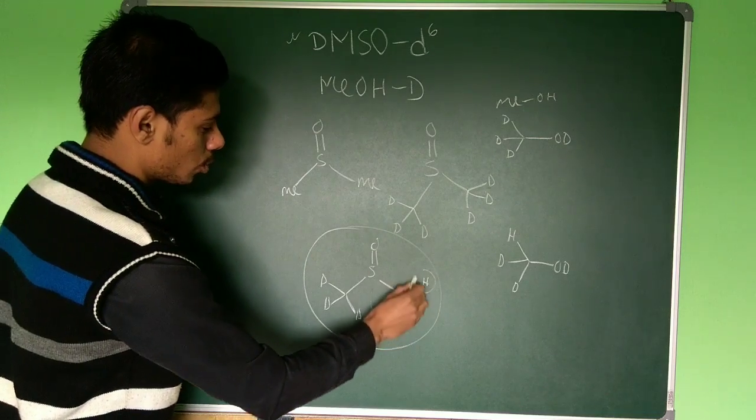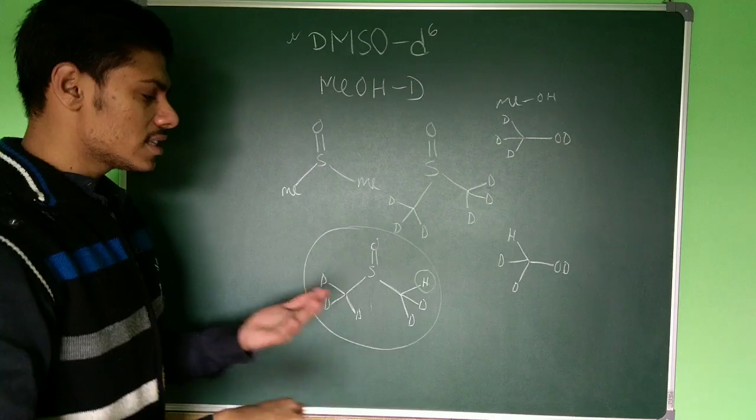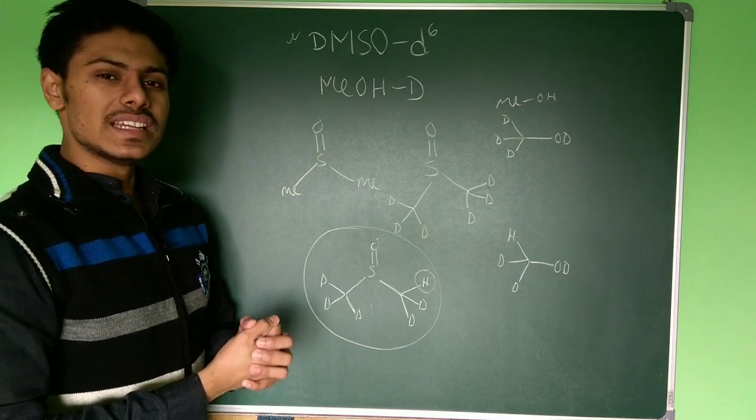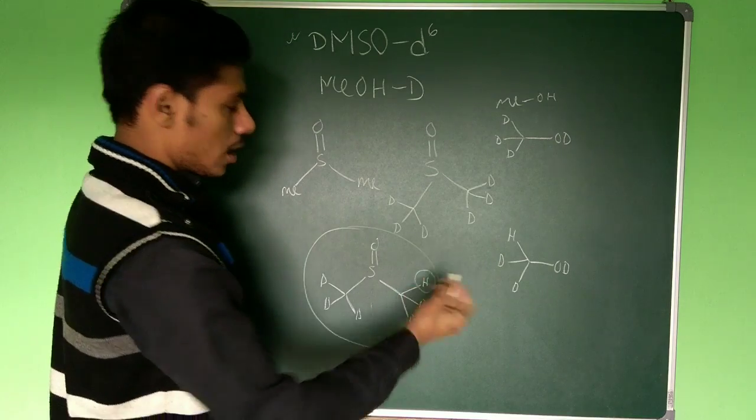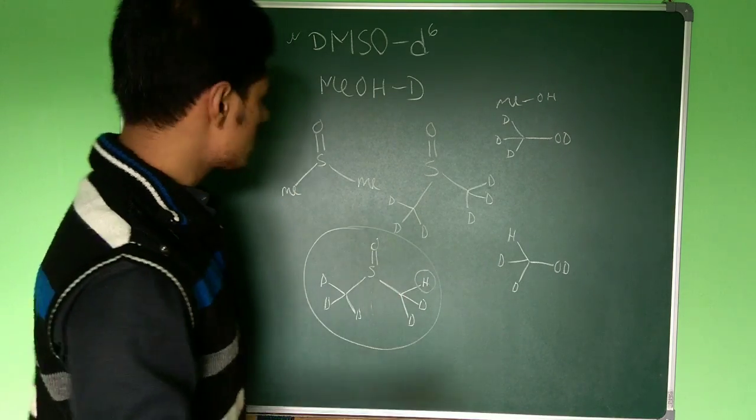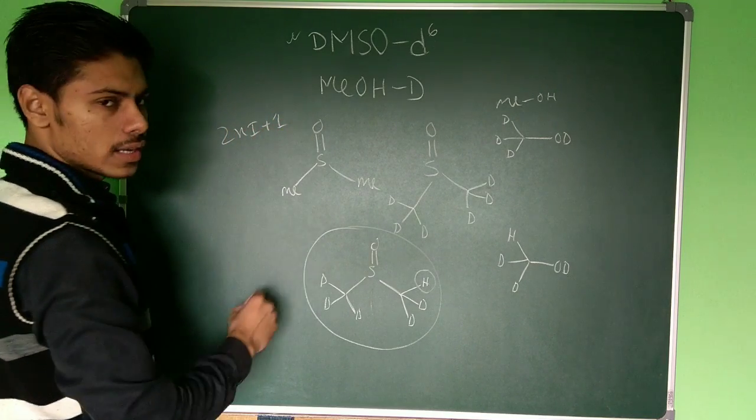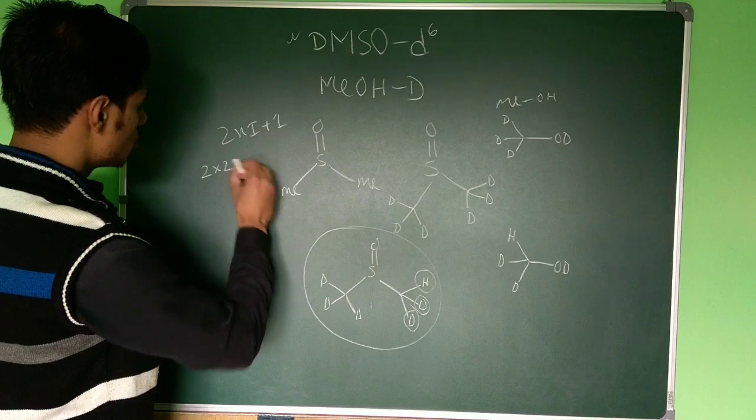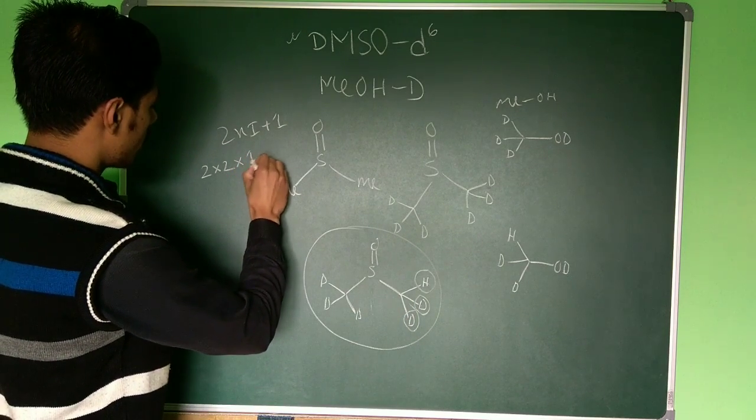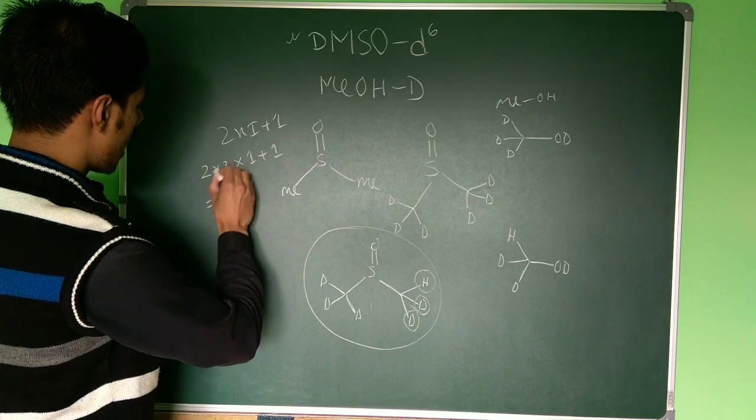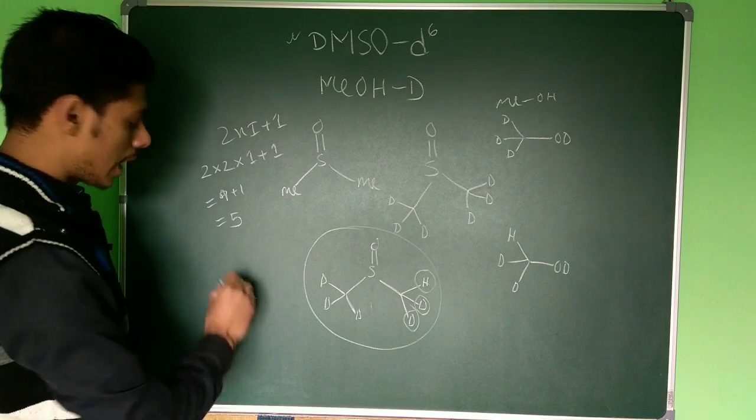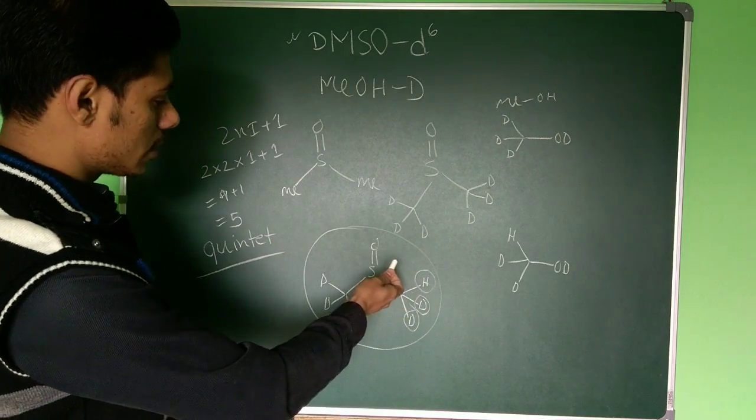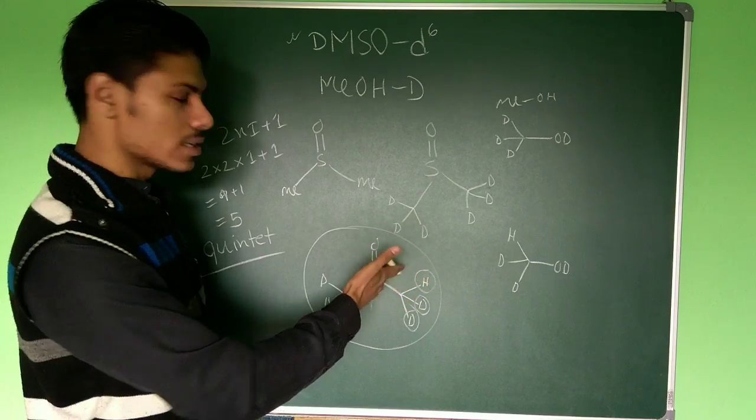If you consider the DMSO-D6 case, this proton which is there as the impurity is actually responsible for the NMR signal. Now if you consider this proton, what will be the intensity of its signal? The very simple rule to find out the intensity is 2NI plus 1. Here you can see deuterium - 2 deuterium are there, so N value will be 2, so 2 into 2 and its I value is 1, so into 1 plus 1, that is it will have 4 plus 1, that is 5. So you will have a quintet. In case of DMSO-D6, the signal which you will get will be quintet and this will be due to the splitting by these 2 deuterium.